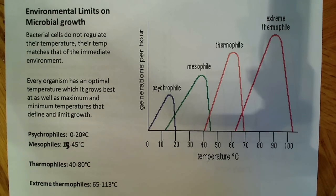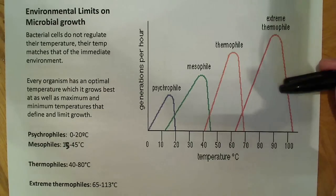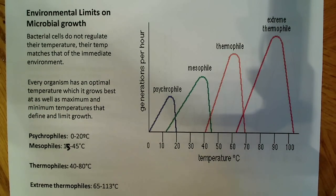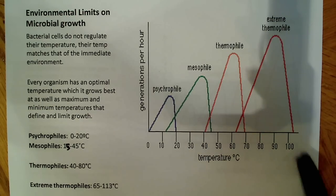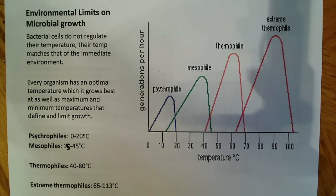I want to talk about environmental limits on microbial growth. Bacteria cells don't regulate their own temperature, so their temperature is going to match that of the environment. Naturally, microbes are present in almost every imaginable environment. We see them under very high temperature conditions and in very low temperature conditions, between 0 and 20 degrees Celsius, and also between 63 and over 100 degrees Celsius.